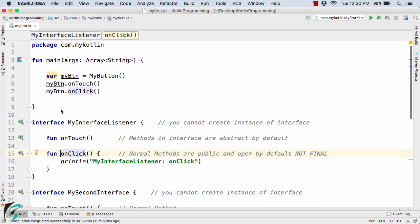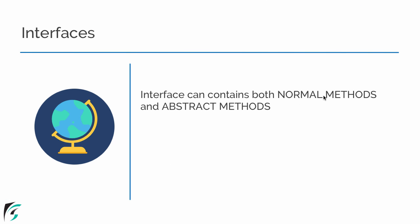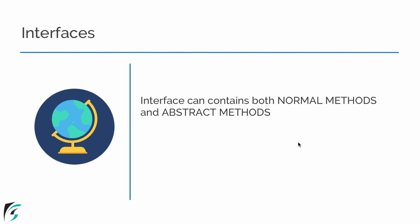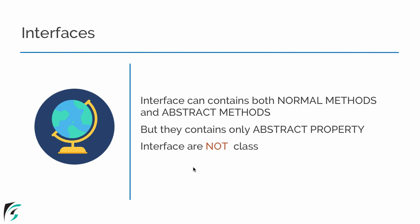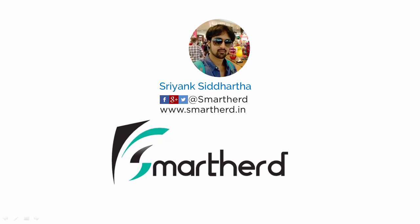This was all about the practical example. Theoretically: an interface can contain both normal methods and abstract methods. For properties, it can contain only abstract properties — you cannot initialize any variable inside an interface. The interface is not a class, so similar to an abstract class, you cannot create an instance of an interface. It only provides a short-term service such as a button click, on touch, checking a checkbox, or opening a dialog box.